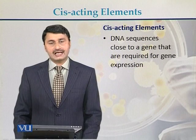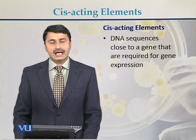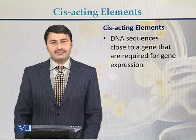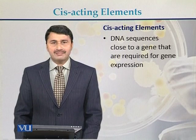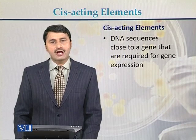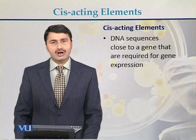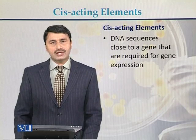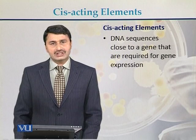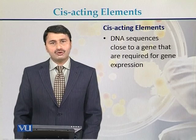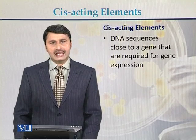In summary, cis-acting elements are DNA sequences including the TATA box, GC box, and CAT box — proximal sequences present near a gene — particularly in eukaryotes. In prokaryotes, they correspond to the minus 10 and minus 35 regions. Additionally, in eukaryotes, there are nucleotide sequences present at a distance from the gene, called enhancers and silencers, which are also classified as cis-acting elements.